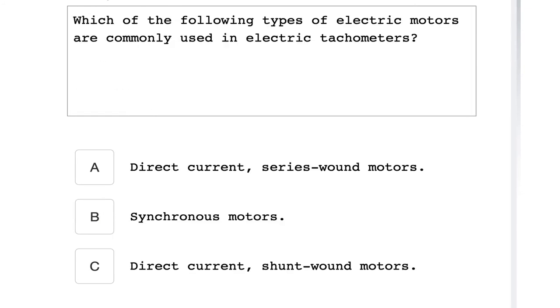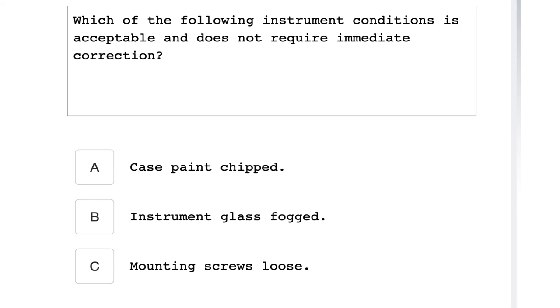Which of the following types of electrical motors are commonly used in electrical tachometers? Synchronous motors. Which of the following instrument conditions is acceptable and does not require immediate correction? Case paint chipped.